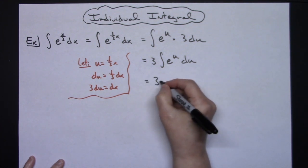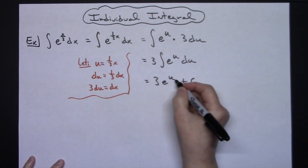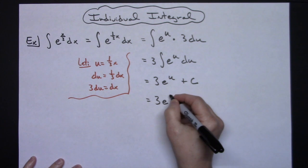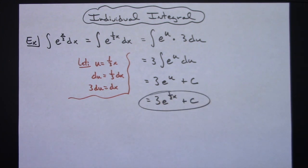Now this integrates straight to e to the u, so then I'll have a 3 e to the u plus c. And then replacing my u with what that equals, I'll have a final answer of 3 e raised to the 1/3 x plus c.